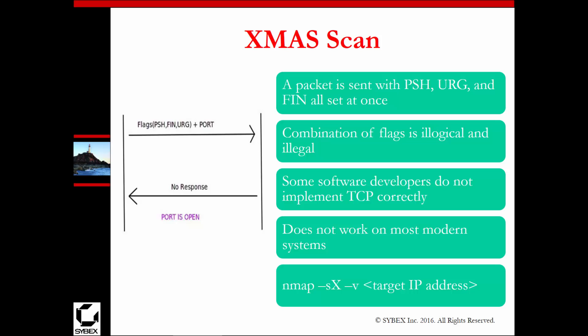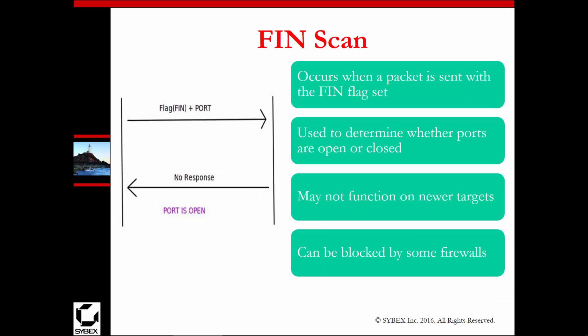We have an Xmas scan, which basically allows us to scan specific flags and ports. Some software developers do not implement TCP correctly, so the way they respond is slightly different. This does work on most modern-day systems, but not always — it's an Nmap scan. We also have a FIN scan, where we scan with the specific FIN flag set on a specific port. It occurs when a packet is sent with the FIN flag set and is used to determine whether ports are open or closed. It doesn't always function on newer targets and is typically blocked by firewalls — FIN scans are somewhat outdated, but they still have uses with older operating systems.